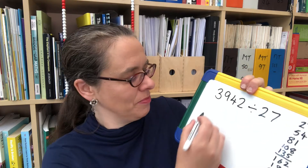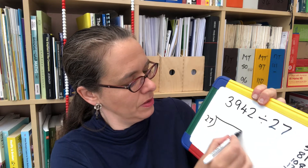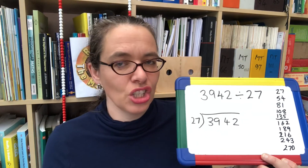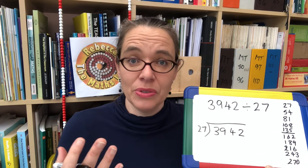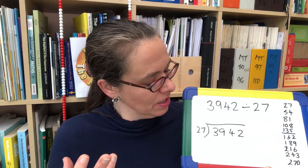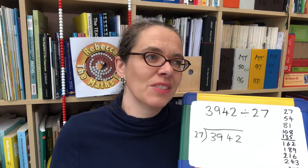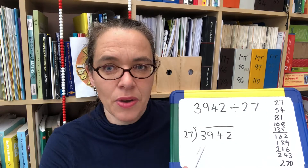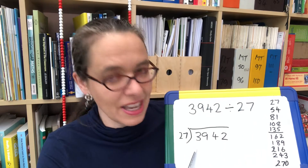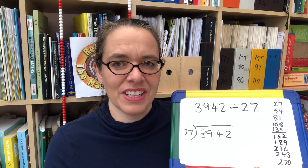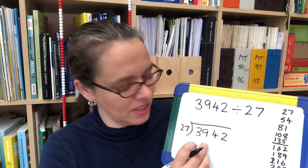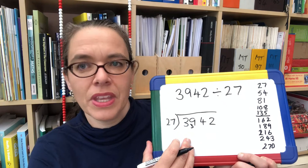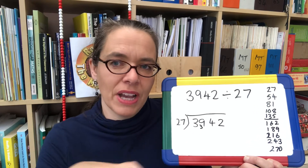Let's get started with short division. We set that up as 27 into 3942. My expectation is that by this stage children can imagine the place value counters that they will have been using with easier calculations — so when you talk about them, they're in their imaginations. If not, it's really best to go back to earlier divisions to work with place value counters until they are. So we've got three 1000 place value counters and we want to share them into 27 equal groups — we can't, because there aren't enough. So we break them down into hundreds place value counters and we get 30 of them. Now we have 39 one-hundreds and we can place one of those in each of our 27 groups.